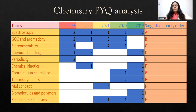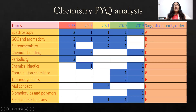NMR and ESI are the more important spectroscopy topics. For chemical kinetics, they mostly ask questions from first-order reactions — half-life and related concepts.